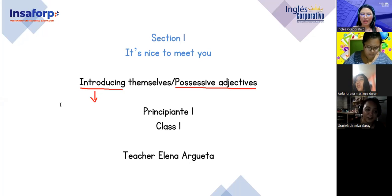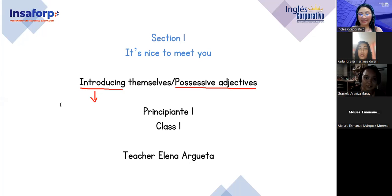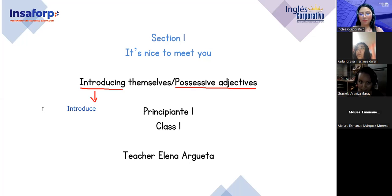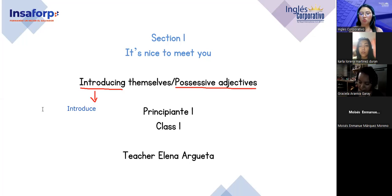Presentarse — miren, how do you say 'presentarme'? Introduce. Sería introduce: 'me presento con alguien nuevo' — I introduce myself. Nunca vamos a decir 'I am presenting' — presenting es otra acción, hablar frente a un público. Pero presentarme, intercambiar información básica con alguien, es introduce — introducing myself.